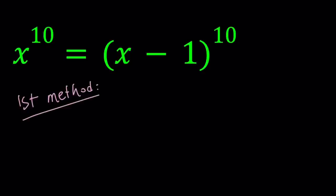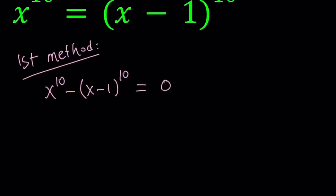For my first method, I'm going to write this expression as a difference of two powers. In this case, that is going to be the tenth powers and set it equal to zero. Now at this point, we can think of this as a difference of two squares if we consider 5 times 2 equals 10. So we can write this as x to the fifth power squared minus x minus 1 to the fifth power squared equals zero.